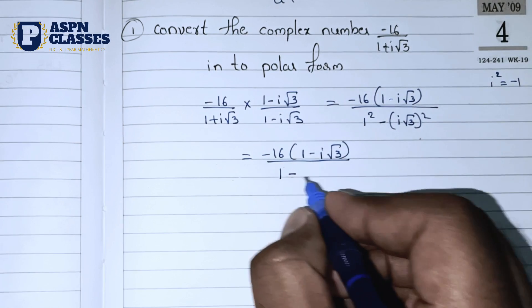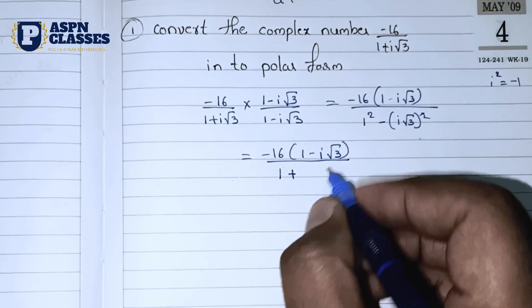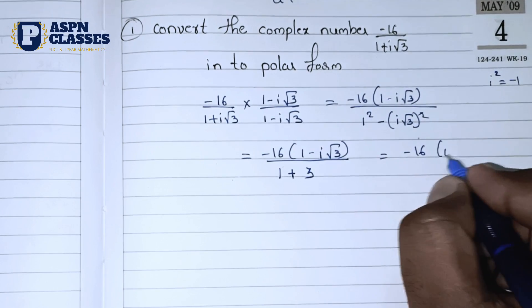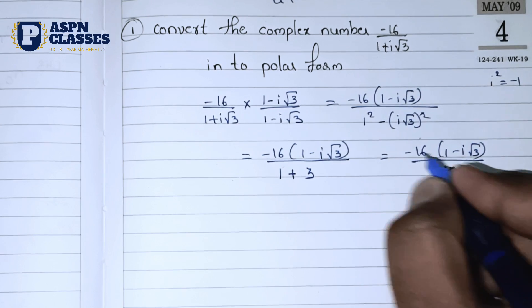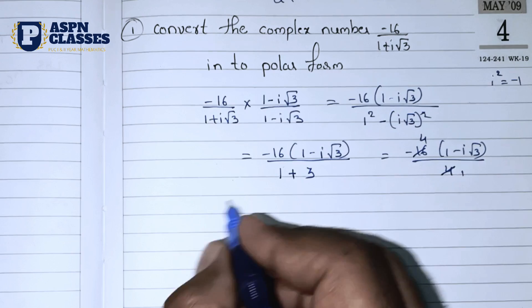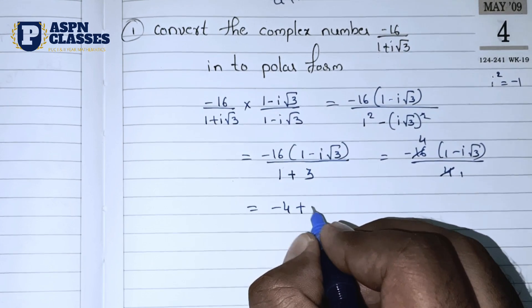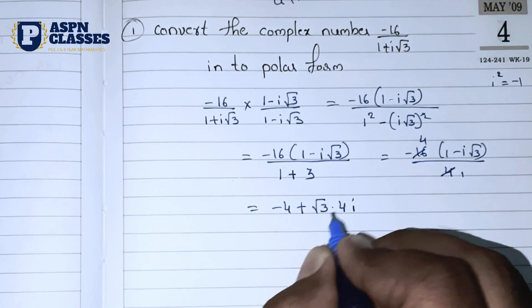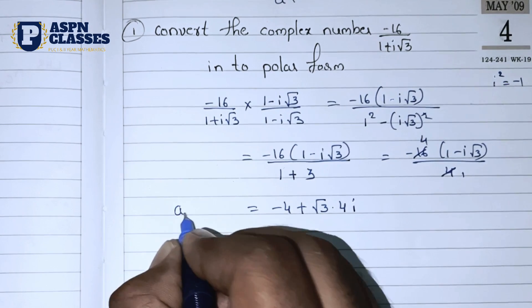So i² equals minus 1. Minus i squared equals plus. So if we have root 3 equal to 2 after cancelling, then 3 plus 1 equals 4, giving us 4. So minus 4 is the real part and 4 root 3 into i is the imaginary part. This is the result in a plus iB format — this is the complex number in a plus iB form.